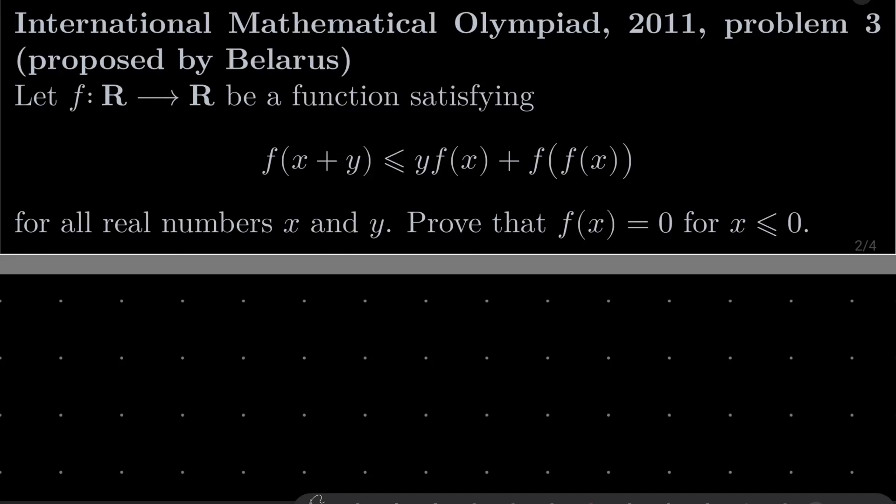Hello friends. In this video I'd like to solve the following problem from the International Mathematical Olympiad 2011, problem number 3, which was proposed by Belarus. Let f be a function from the set of real numbers into itself satisfying the following inequality: f of x plus y is less than or equal to y times f of x plus f of f of x, for all real numbers x and y.